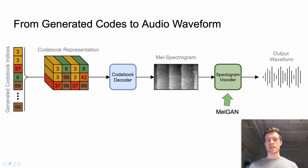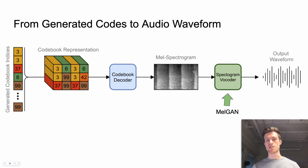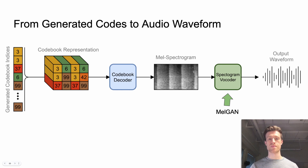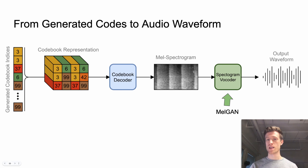As a vocoder, we train MELGAN from scratch on the VGGSound dataset. MELGAN takes a fraction of a second on a CPU to reconstruct a 10-second spectrogram and delivers decent quality. Even though MELGAN is designed for speech, we found it performs exceptionally well even if trained on an open-domain dataset.